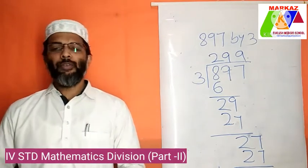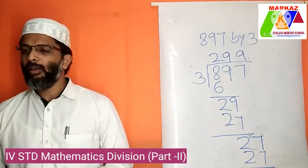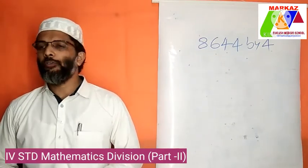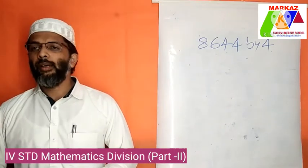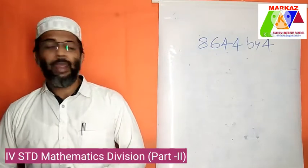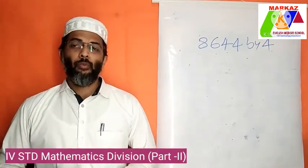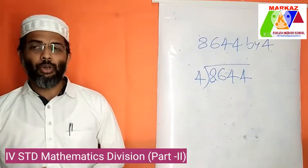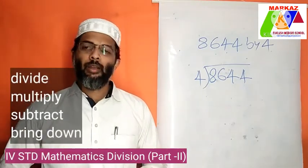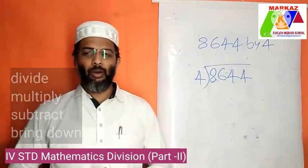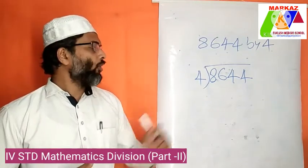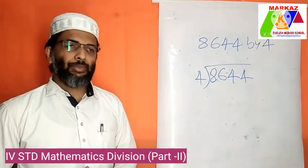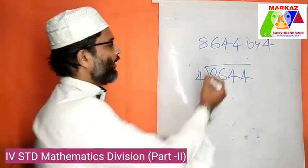These are the basic ideas of division. Next, let us divide a 4-digit number by a 1-digit number. Look at this example: divide 8644 by 4. Here we have the dividend which is a 4-digit number and the divisor which is a single-digit number. Start your division steps. First, how many times does 4 go into 8? 2 fours are 8. Answer is 2.